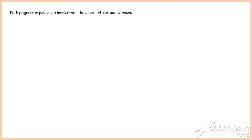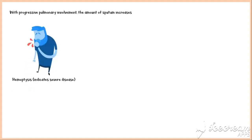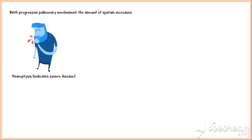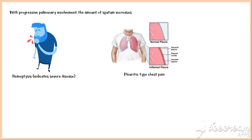With progressive pulmonary involvement, the amount of sputum increases. Hemoptysis, or coughing up blood, indicates severe disease. And some people experience a pleuritic-type chest pain, which suggests the involvement of pleural surfaces.